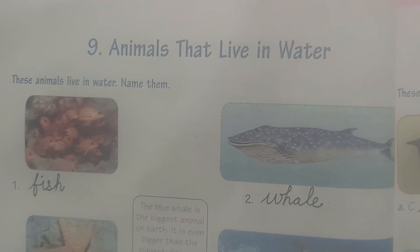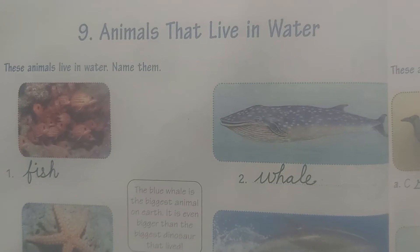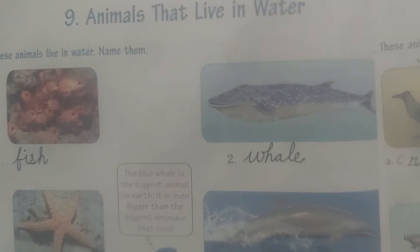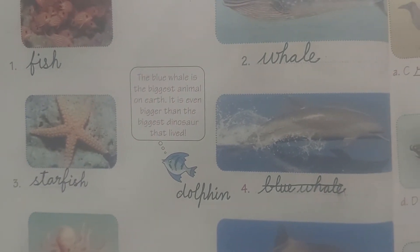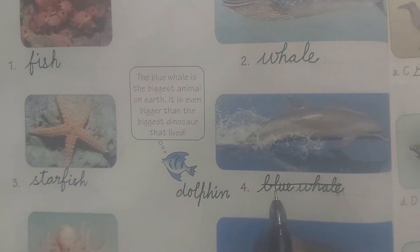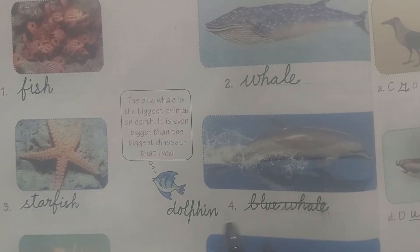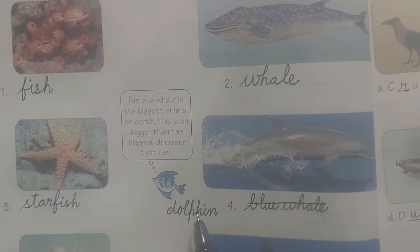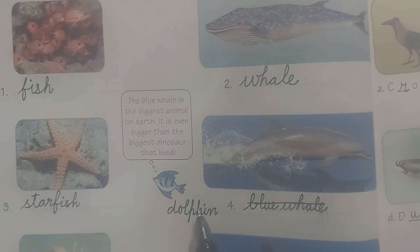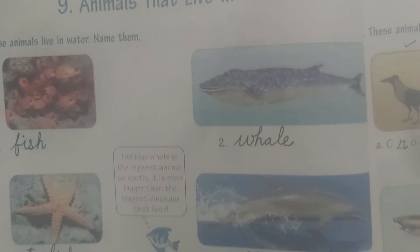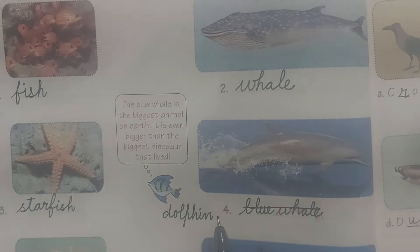Good morning children, welcome to the GK class. We have done lesson number 9, and in column number 4, by mistake I told you to write 'blue whale'. This picture is not of a blue whale — this picture is of a dolphin. So you have to rub and write 'dolphin' — D-O-L-P-H-I-N. Do this correction in your book, lesson number 9, column number 4.